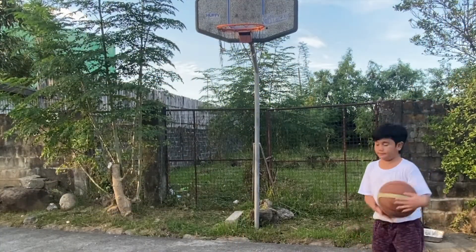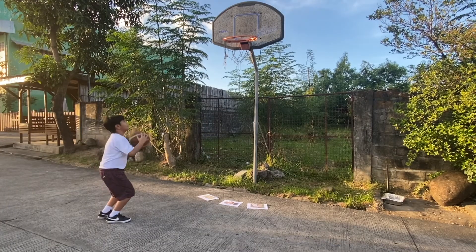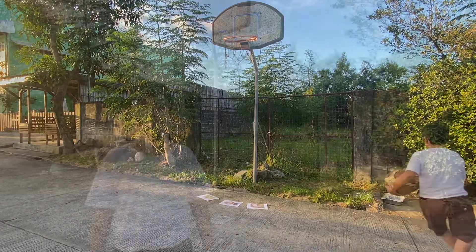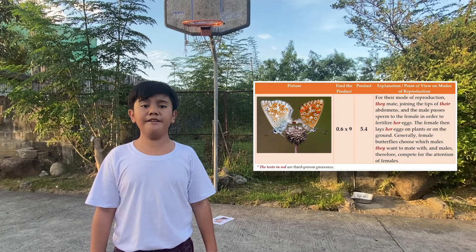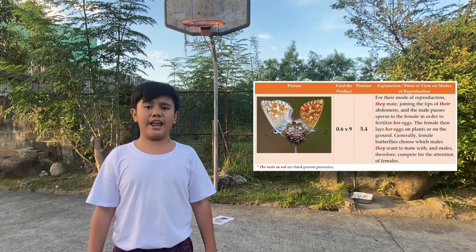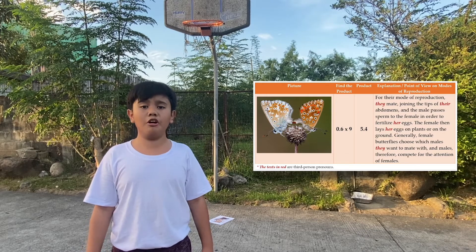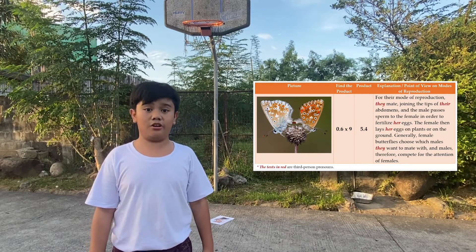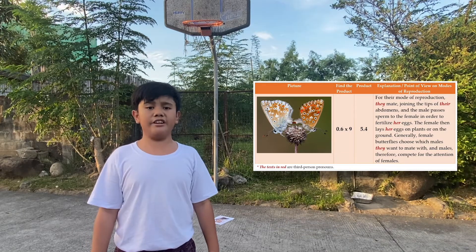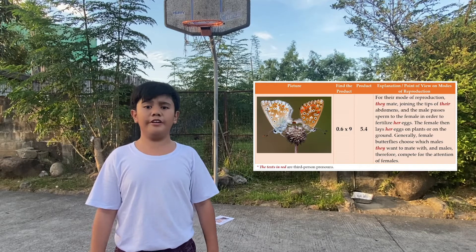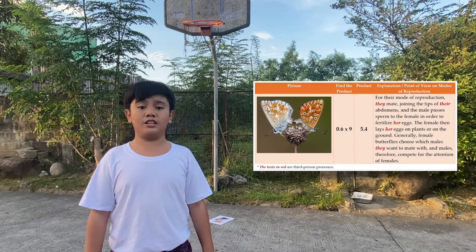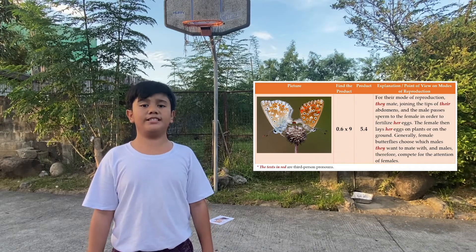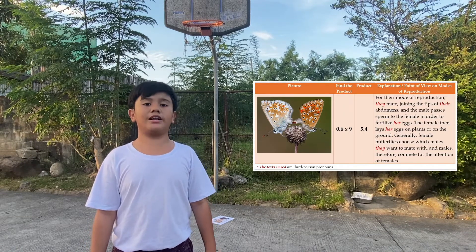Let's have another shot! Another great shot! The ball fell on a picture of a butterfly. For the mode of reproduction of butterflies, they mate during the tips of their abdomens and the male passes sperm to the female in order to fertilize her eggs. The female then lays her eggs on plants or on the ground. Generally, female butterflies choose which males they want to mate with, and males therefore compete for the attention of females. For the given decimals, six tenths times nine is equal to five and four tenths.